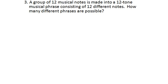This problem says a group of 12 musical notes is made into a 12-tone musical phrase consisting of 12 different notes. How many different phrases are possible? So, you've got 12 different notes, and phrases are different if they have a different ordering of those notes. So, it's just like 12 people standing in line for a photo. This is another prototypical example where a factorial is the easiest way to solve it.